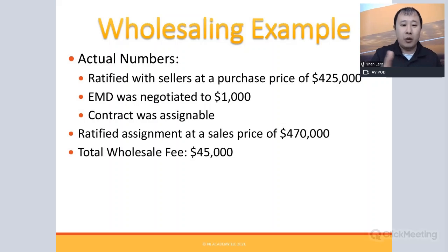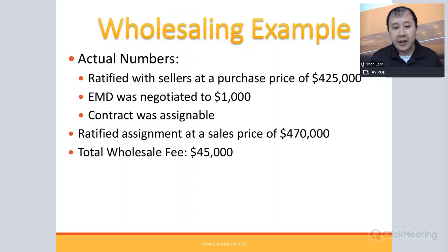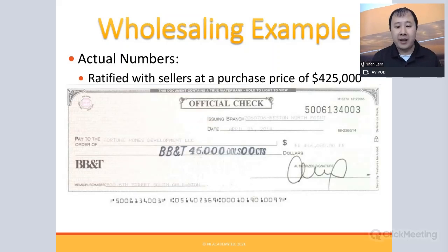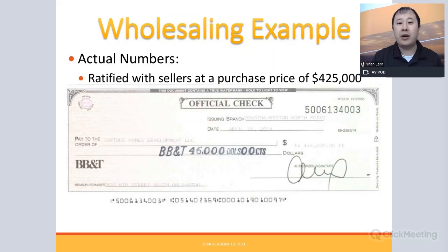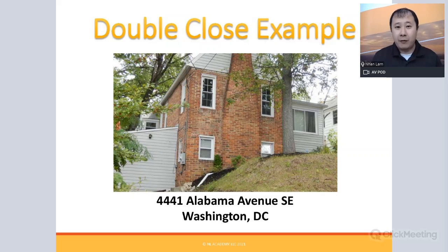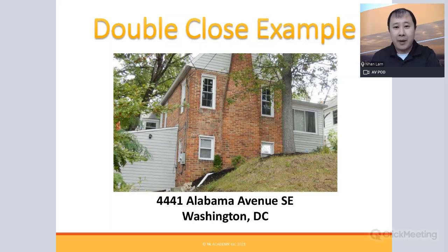The total wholesale fee was $45,000 — plus we were reimbursed the $1,000 deposit, for a total cashier's check of $46,000. This deal took approximately 22 hours from start to finish: meeting the seller, negotiating, writing the contract, visiting the property, doing the open house, marketing, and going to settlement. At $45,000 for 22 hours — that's a pretty decent hourly wage. Do a couple of those every year and you're set.